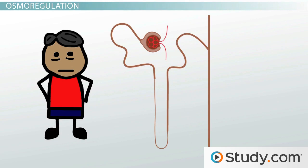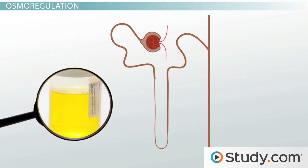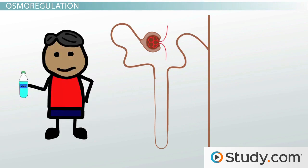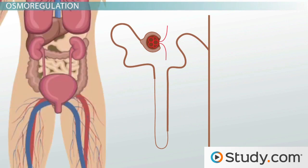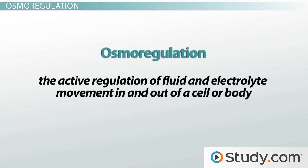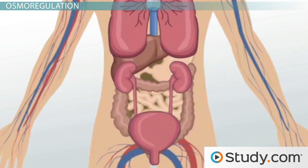When dehydrated, your kidneys create super-concentrated urine, sometimes more than six times the concentration of blood. On the flip side, if you drink too much and therefore have fluid overload, your kidneys can alter their role and cause diuresis — the increased release of urine — in order to get rid of excess fluid. This active regulation of fluid and electrolyte movement in and out of a cell or body is called osmoregulation, and is chiefly accomplished on a systemic or whole-body scale by the kidneys.